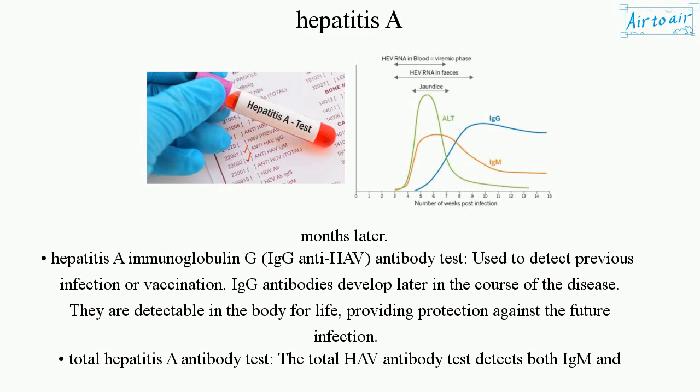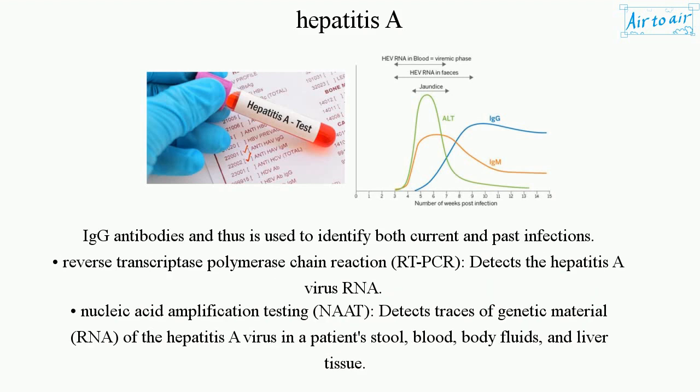The Hepatitis A immunoglobulin G (IgG anti-HAV) antibody test is used to detect previous infection or vaccination. IgG antibodies develop later in the course of the disease and are detectable in the body for life, providing protection against future infection. The total hepatitis A antibody test detects both IgM and IgG antibodies and is used to identify both current and past infections.